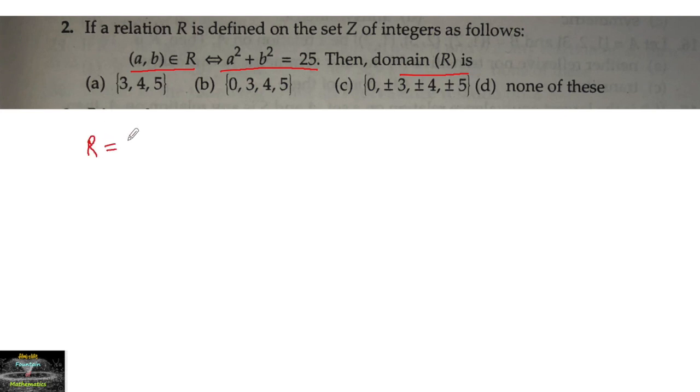Here, given a relation R = {(a,b) | a² + b² = 25} where a, b belongs to Z (integers).